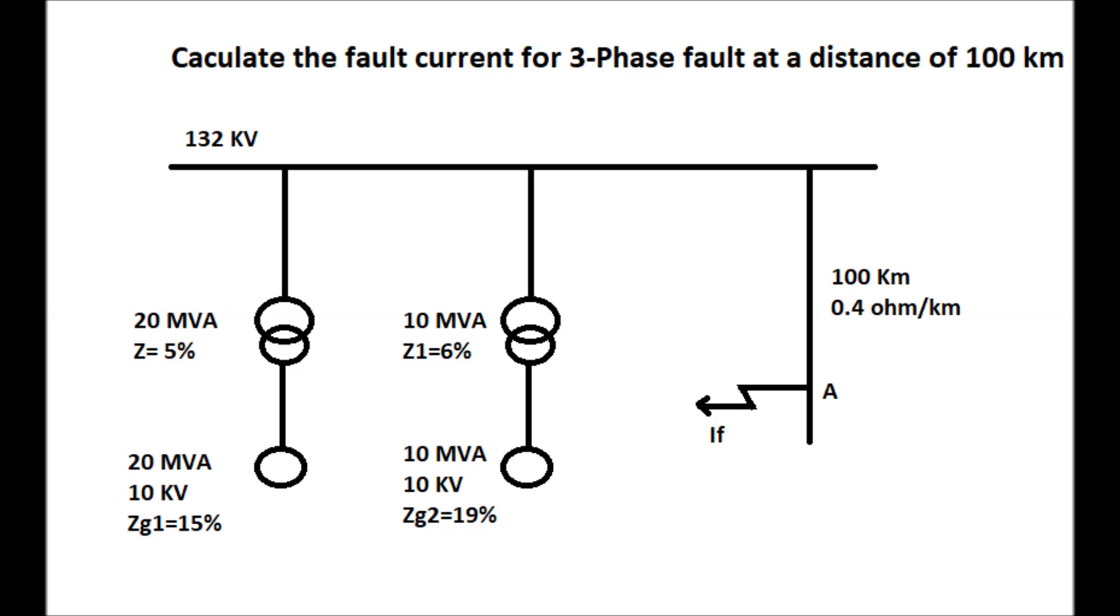This system has a 132 kV substation with two generators of the rating of 10 kV 20 MVA and 10 kV 10 MVA respectively, and their percentage impedance is 15% and 19% respectively.